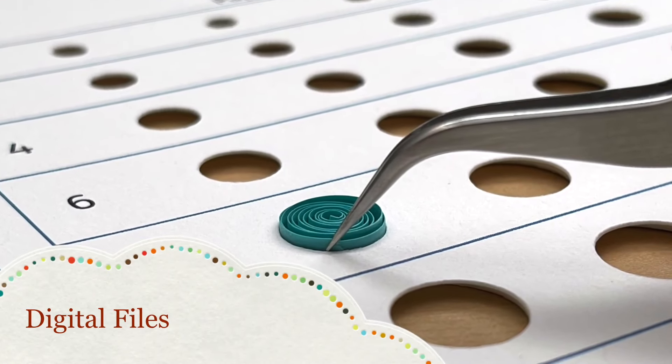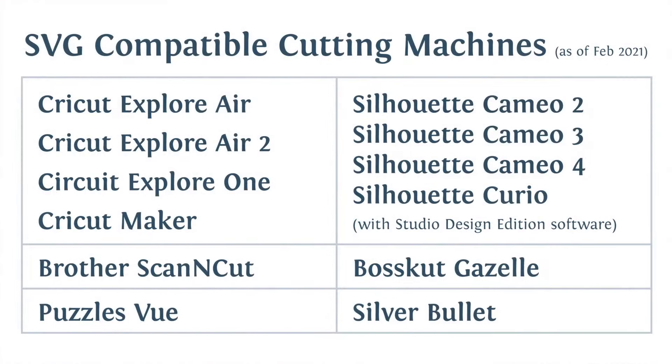I'd like to start by explaining how the digital files work together. Here's a list of machines that are also SVG compatible. You can just pause the video here and take a look and see if yours is here.